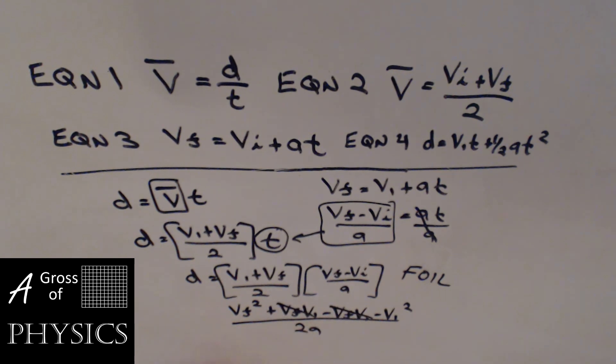You're left with D equals VF squared minus VI squared over 2A. Multiply both sides by 2A, and we have VF squared minus VI squared equals 2AD. That's what we're going to call equation 5. You had to have fun on that one.